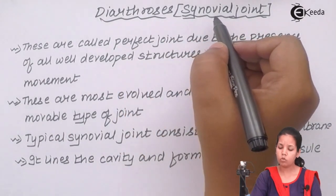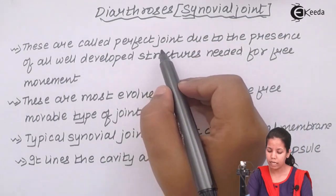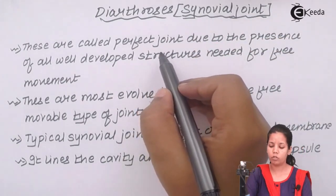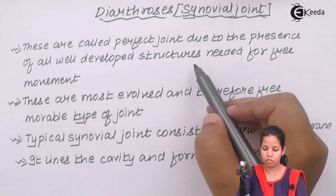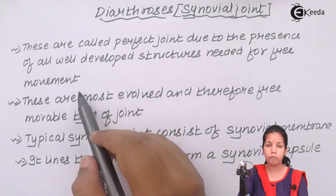Synovial joints are termed as perfect joints. The reason why they are termed as perfect joints is because of the presence of a well-developed structure that's needed for their free movement.